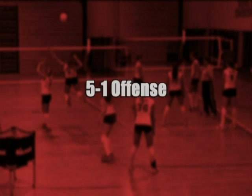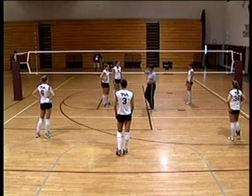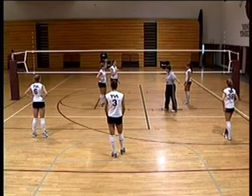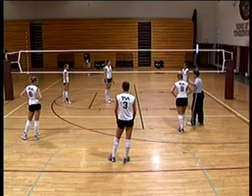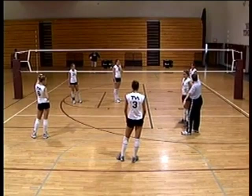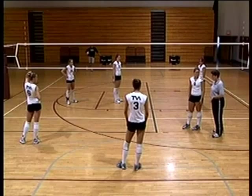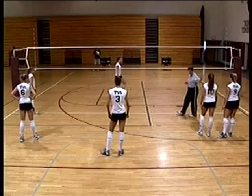Now our setter's in the front row again — we've gone through the 6-2 and the 4-2. Now let's go through a very popular offense, the 5-1. We'll identify her as the number one setter; she will set no matter where she is, whether in the front row or the back row. I normally line up with my number one middle right next to me, and my number one outside next to me, so whenever I'm in the front row, my two best hitters are with me.